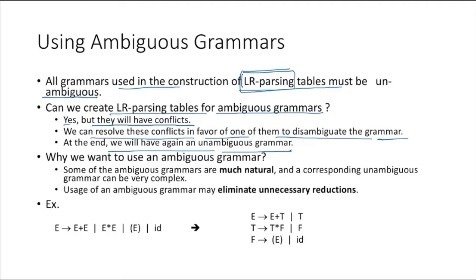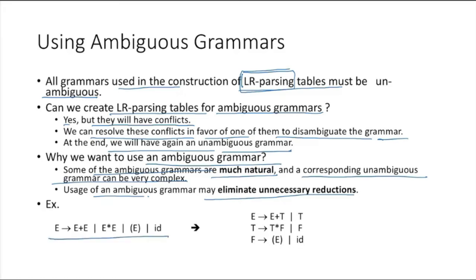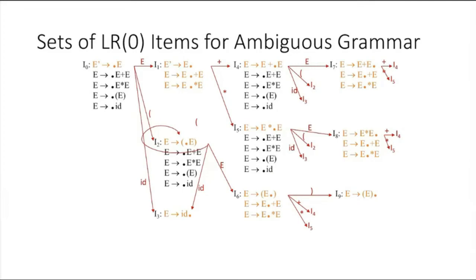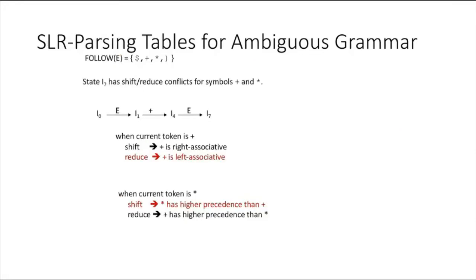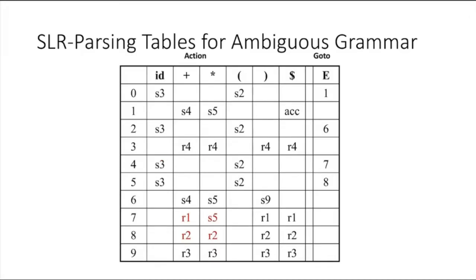Why would we want to use an ambiguous grammar? Because some ambiguous grammars are much more natural, and the corresponding unambiguous grammars can be very complex — it is not always easy to convert an ambiguous grammar to an unambiguous one. Use of an ambiguous grammar may eliminate unnecessary reductions and also keep the table smaller. For example, an ambiguous grammar can be converted to an unambiguous form, but that requires many more production items. Here you can see an SLR parsing table for an ambiguous grammar with no visible conflicts.